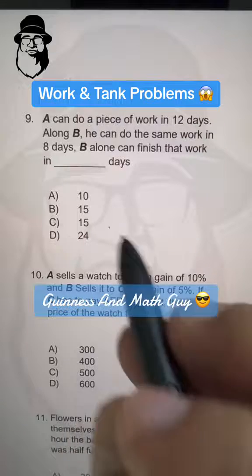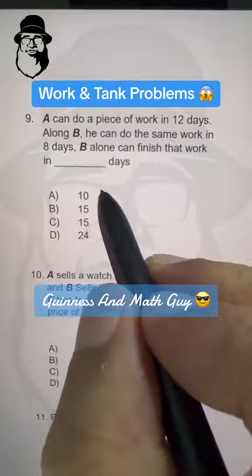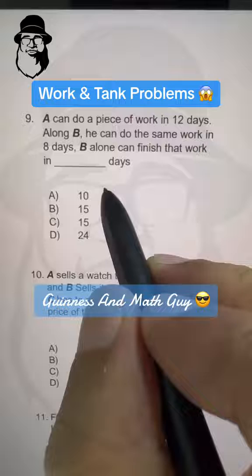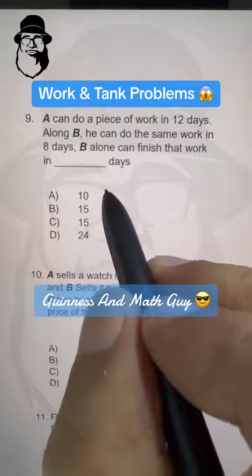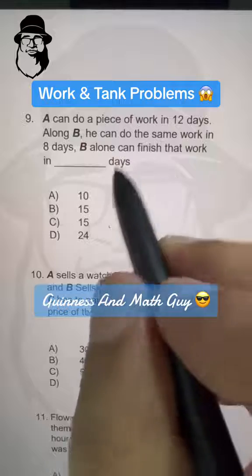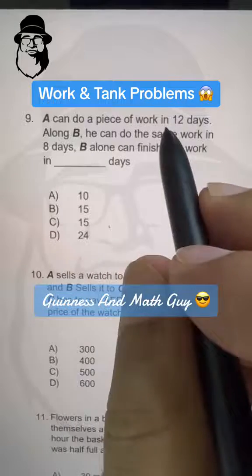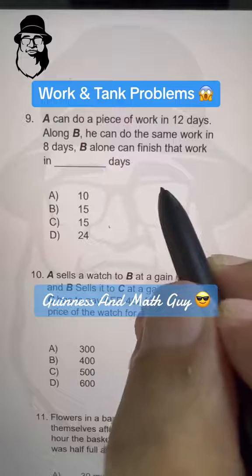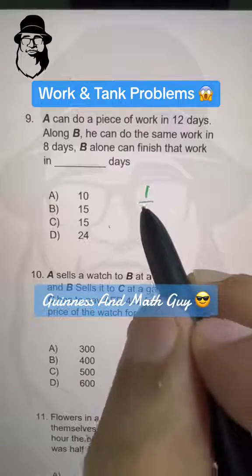Now, I'll tell you how to do it manually, like they teach in school, and then I will tell you how to do it in like 5 to 10 seconds. Now, if A alone can do the piece of work in 12 days, his working efficiency is 1 over 12.